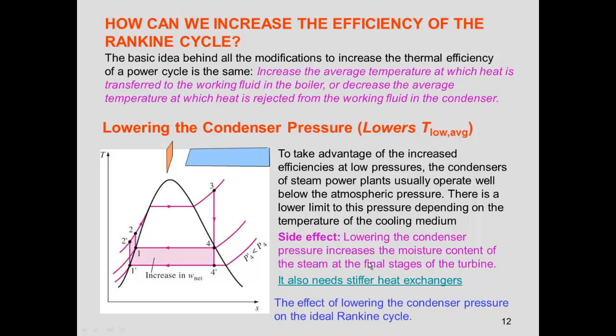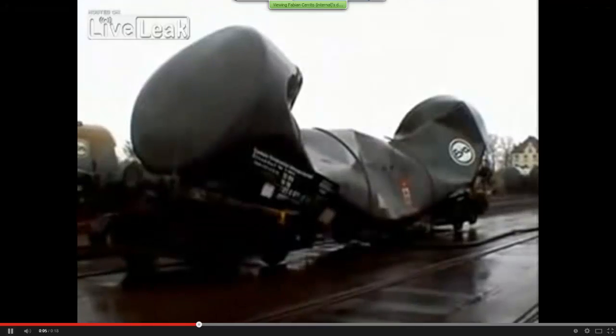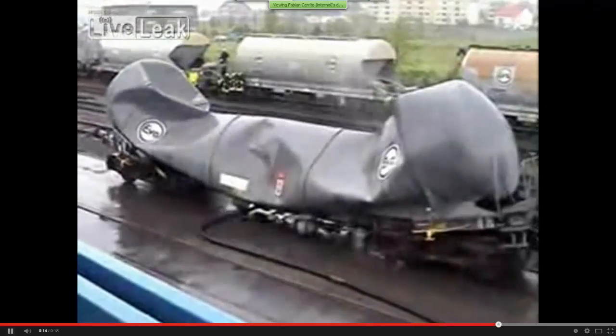However, there are side effects. Lowering the condenser pressure increases the moisture content at the turbine exit — moving from state 4 to 4 prime — which causes corrosion. It also requires stiffer heat exchangers, since the lower pressure creates a larger pressure difference with the ambient. This pressure difference can cause structural collapse, as illustrated by the video showing a vessel collapsing due to a vacuum-like condition.